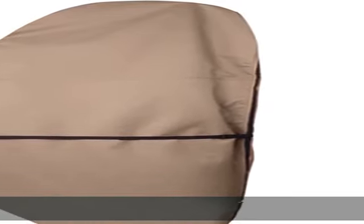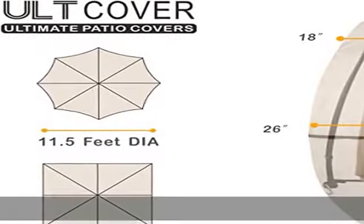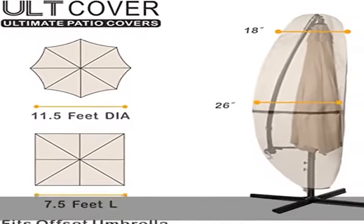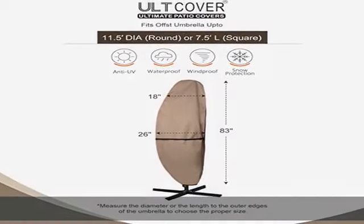Made of top quality 600D polyester canvas complex with waterproof backing. Guaranteed to fit offset banana frame umbrella up to 11.5 dia round, or 7.5 L square.